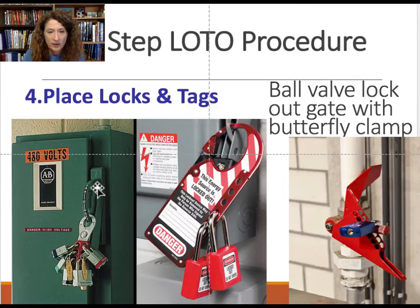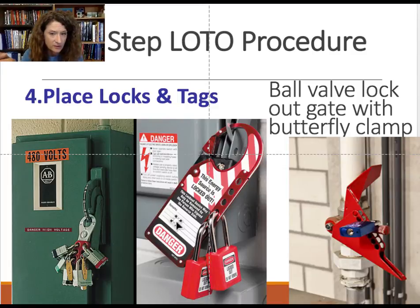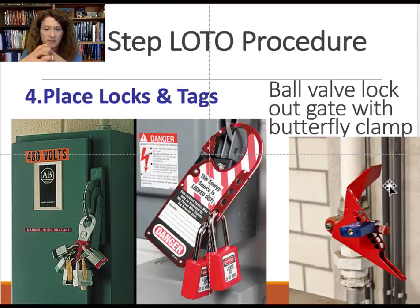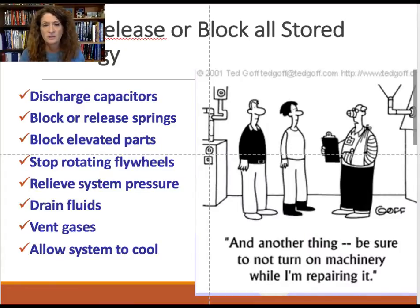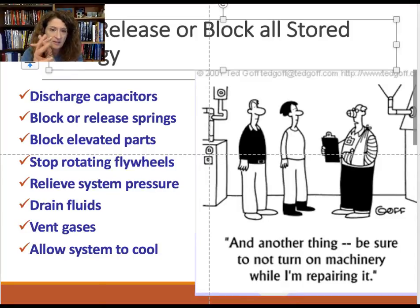Step 4 also involves placing the locks and tags onto equipment that has been turned off. Examples include a power box locked out with a hasp with all employee keys, another power box locked and tagged out with a wax-pencil tag, and a ball valve with a butterfly clamp so it can't accidentally be turned on. Many newer pieces of equipment have built-in lockout-tagout attachment points, but older equipment may not.